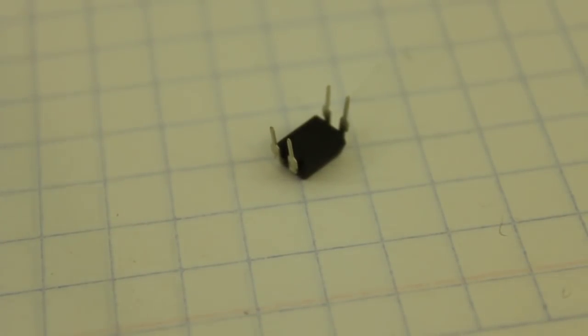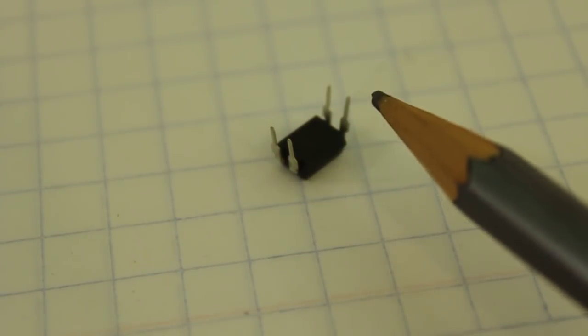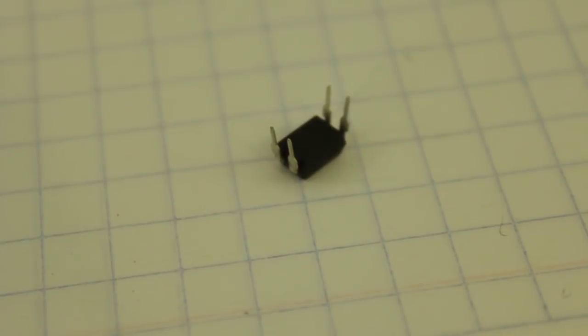The optocoupler also has a coupled input and output electrically isolated, but here the coupling is optical and not magnetic as in the case of the transformer.